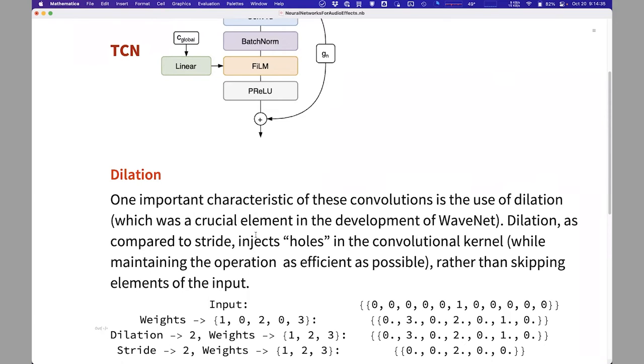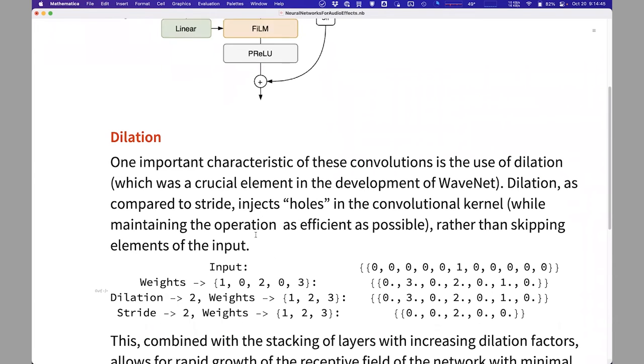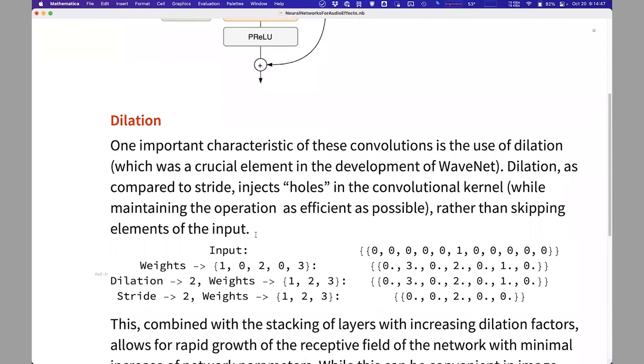You can achieve this by having convolutions with giant kernels or having thousands of convolutional layers. Either of these solutions is terrible because it will take ages to compute because convolutions with big kernels are very expensive.